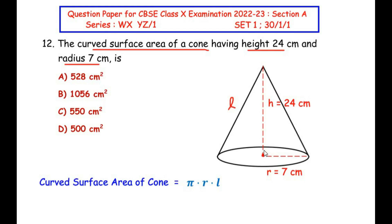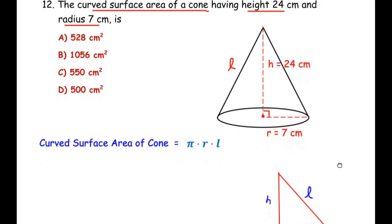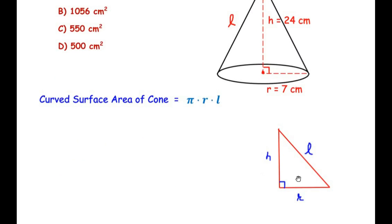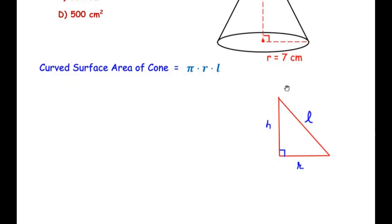So we have to make use of the Pythagoras theorem to find out the slant height by considering this right angle triangle. So let me draw this again. So here we have the perpendicular height, the radius and the slant height. And we know that h value is 24 and r value is 7.